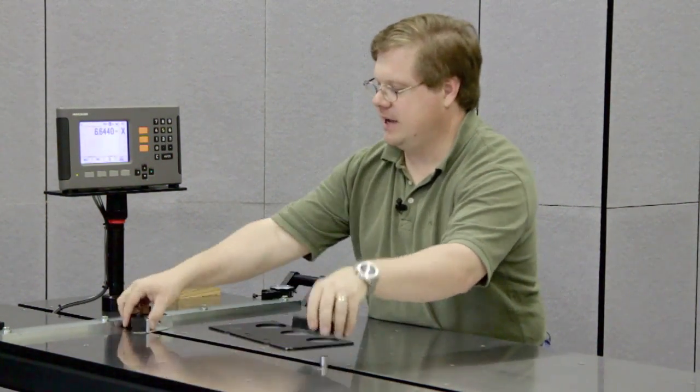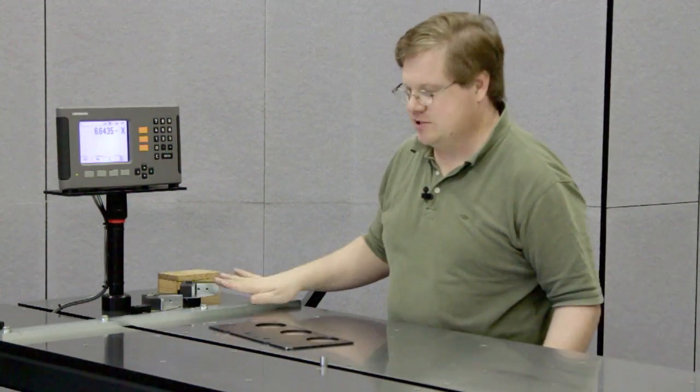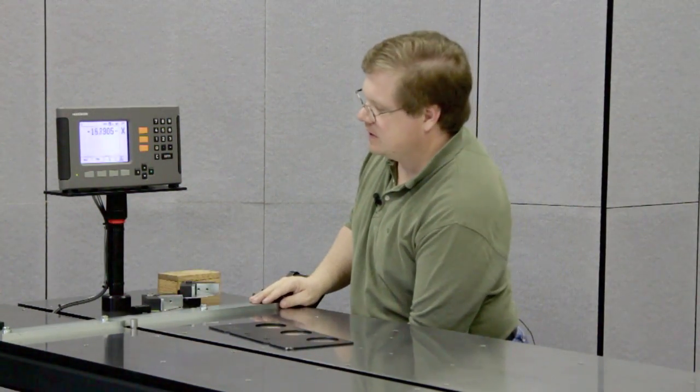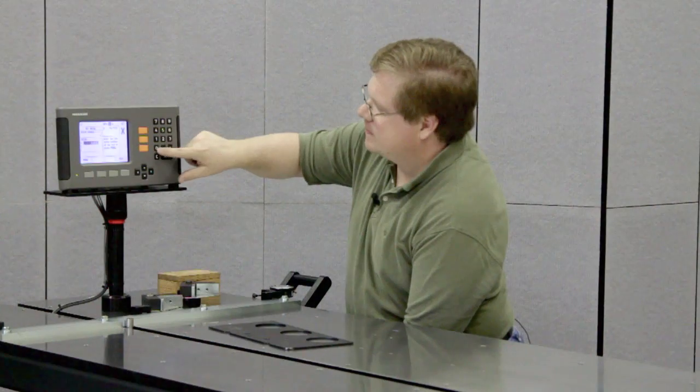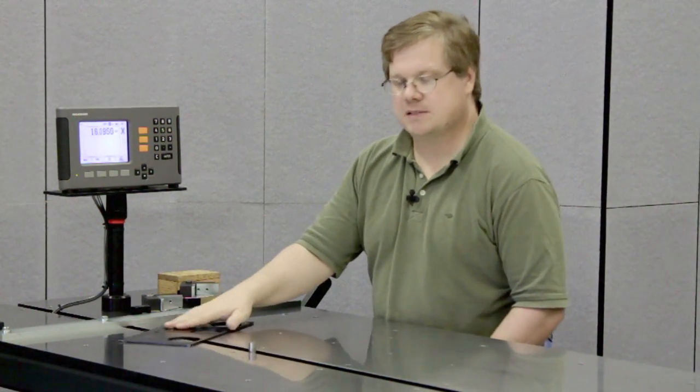And then when you're done checking the diagonals, just pop these out, stick them behind the stop bars—it's a good safe place for them. Bring the probe up, zero it out, and you're back to measuring lengths and widths.